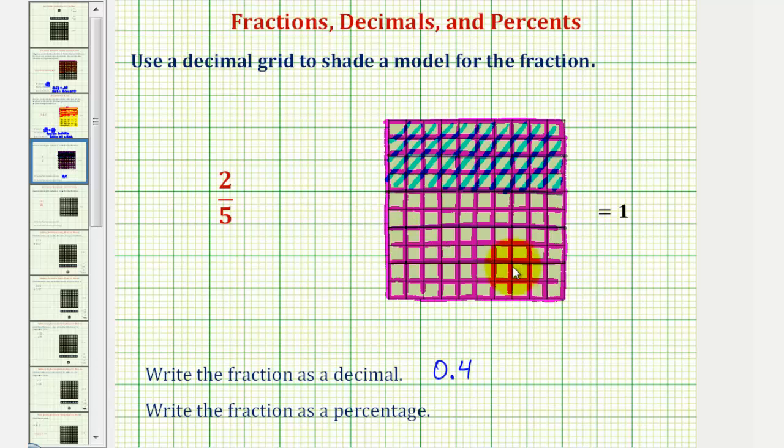Notice when we focus on the one-hundred partitions, forty of them are shaded, which means this represents forty percent.